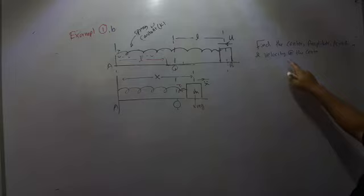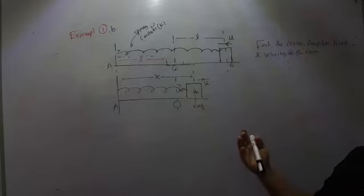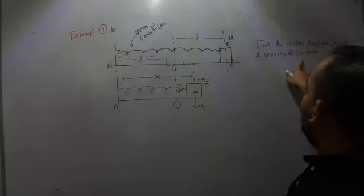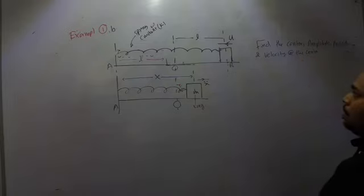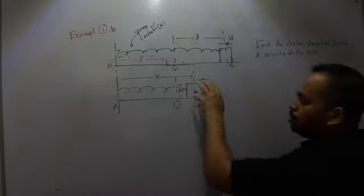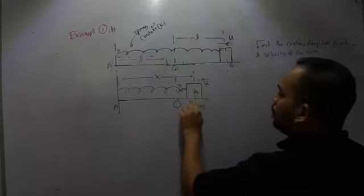We are asked to find the center — since the particle moves with simple harmonic motion, it should have a center — and also find the amplitude, period, and the velocity at the center. To use simple harmonic motion equations, we have to first show that this behaves as simple harmonic motion.